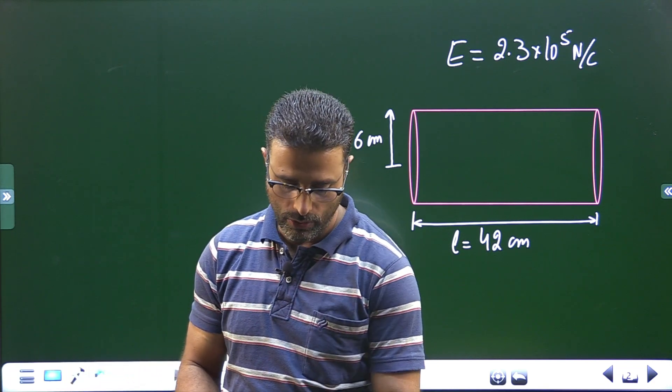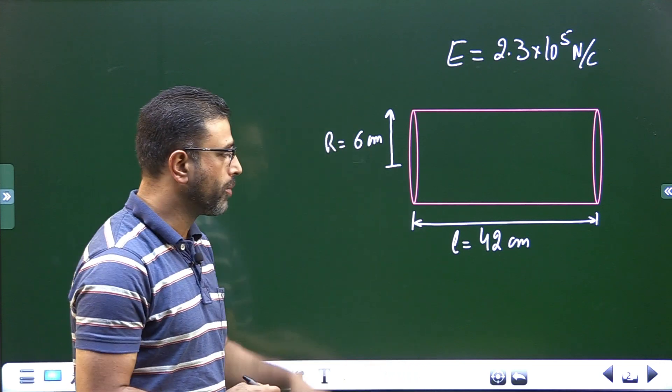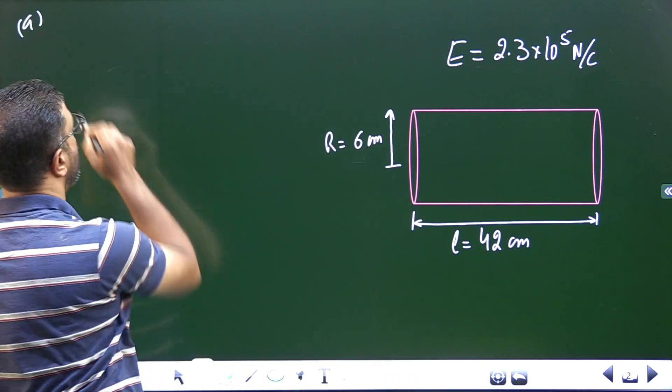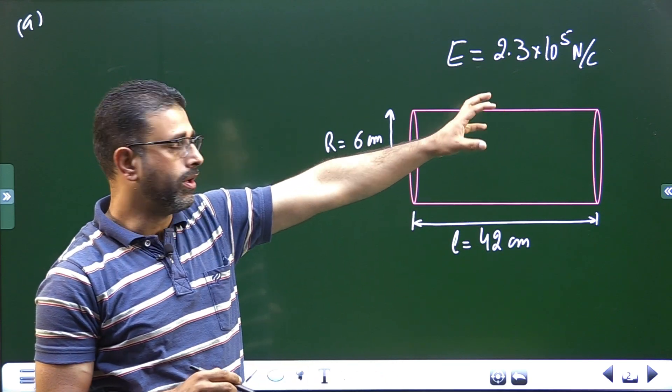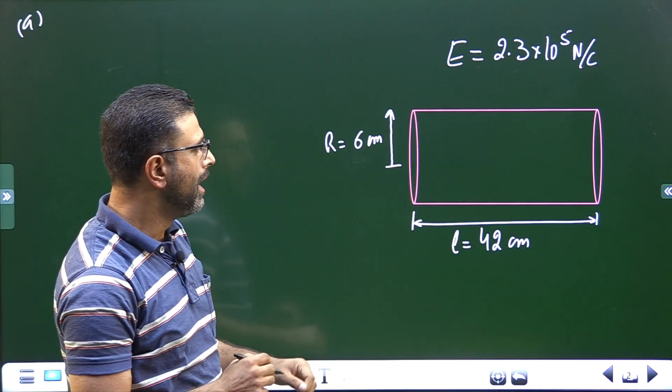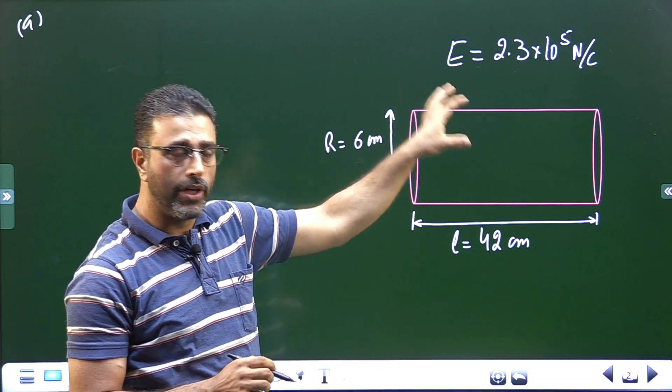So part A: the drum is a metallic body, the drum of a photocopying machine. For a conducting body we know from Gauss law, you must be aware of this after going through this chapter.